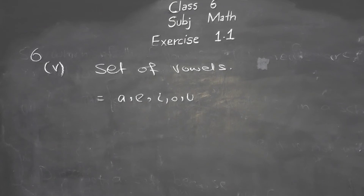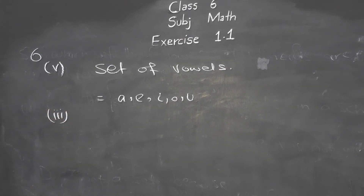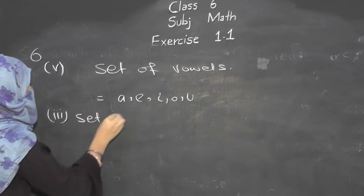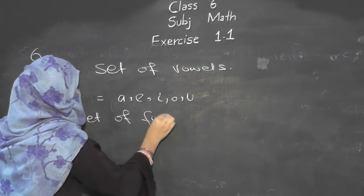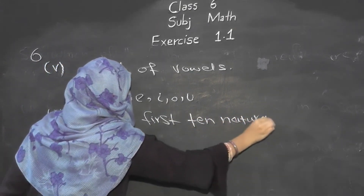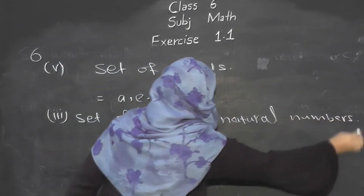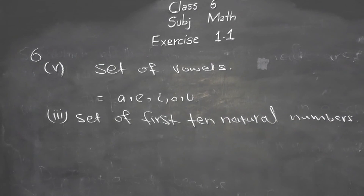Now let's do part 3 of question 6: the set of first 10 natural numbers. Natural numbers start from 1, while whole numbers start from 0. So the first 10 natural numbers are: 1, 2, 3, 4, 5, 6, 7, 8, 9, 10.